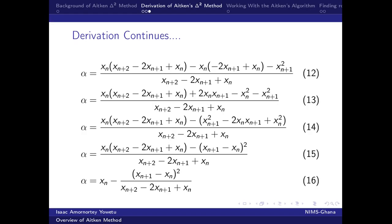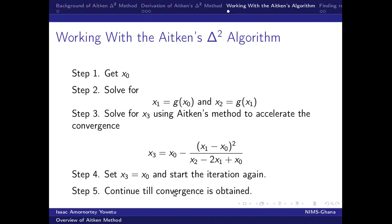Now we want to derive, this is the final step of the Aitken's method. We want to see how best to be able to work with this Aitken's algorithm. So when you have an iterative method which converges linearly, we first of all get our initial guess, substitute our initial guess to get x1, we use the x1 to get x2, and then to get x3, we substitute it into the Aitken's method to get our x3.